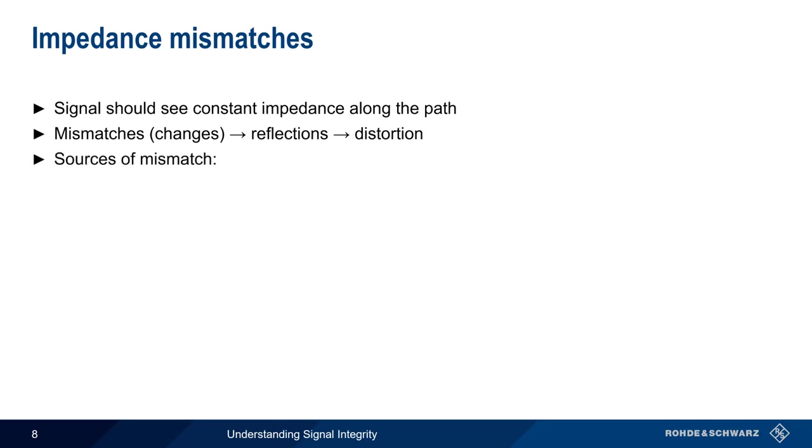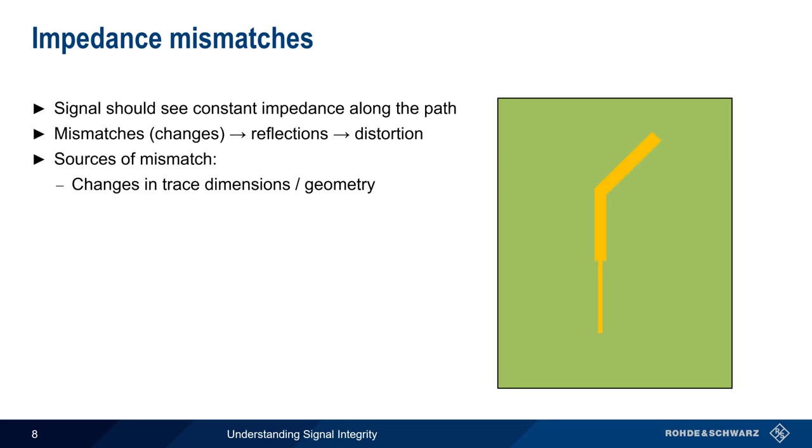There are many different sources of mismatch on a printed circuit board. Changing the dimensions, geometry, or direction of PCB traces is a common cause. This includes things such as the presence of branches or tees. Improper terminations or unterminated stubs can also cause reflections.